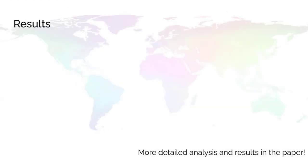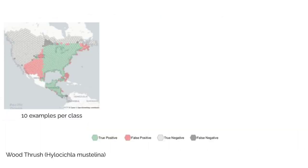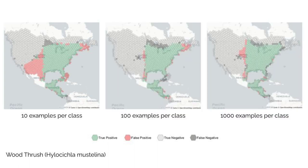Now we will highlight a few results from the paper. This is a visualization of our model's performance for one bird species from the S&T task. This model is trained with only 10 examples per species. While the model's predictions are surprisingly good in the low data regime, they improve as we add more training data.